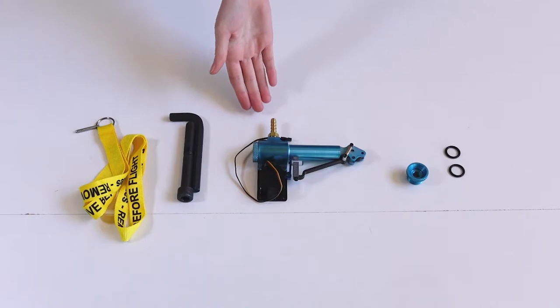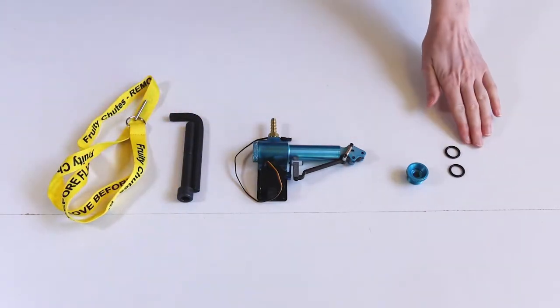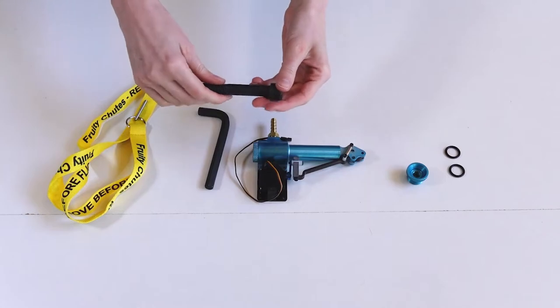Your HAWC unit comes with a safety pin and lanyard, two o-rings, an arming bolt, and an arming wrench.